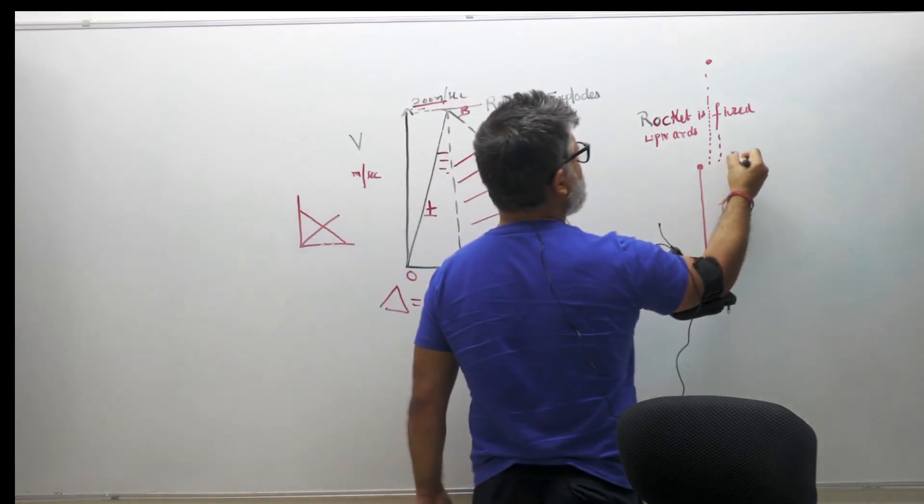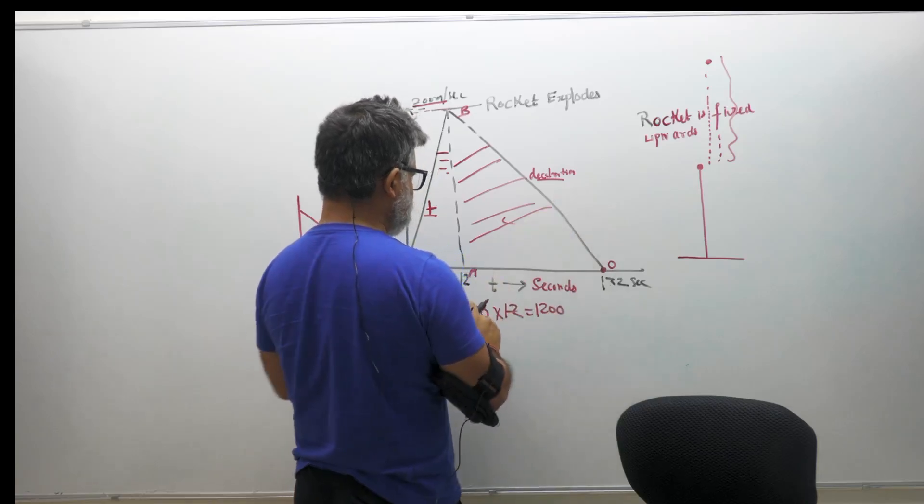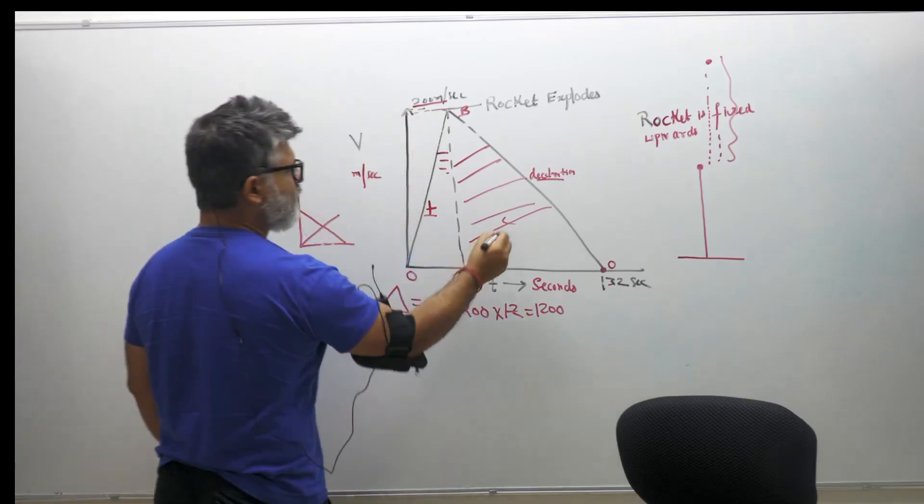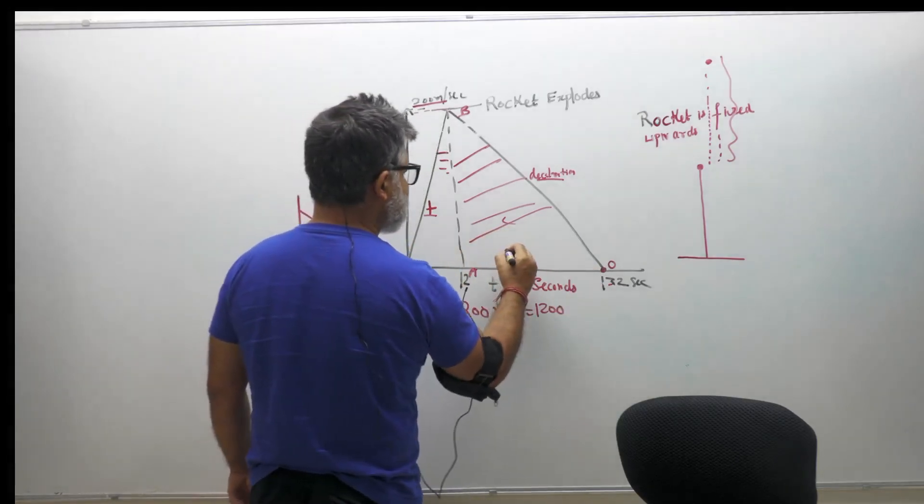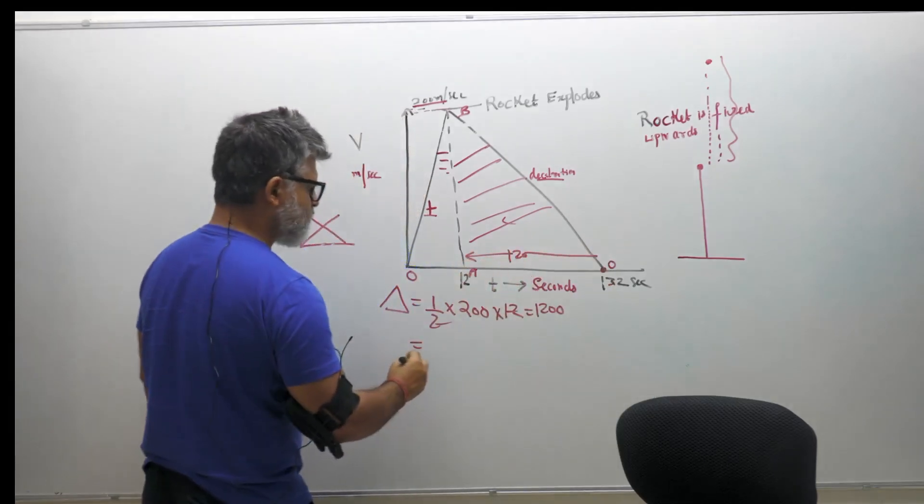So the time is 12 and 132, so the time available to you for this triangle is 120 seconds. So this is 120 seconds. So half into base 120 multiply by the height again.